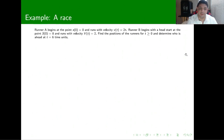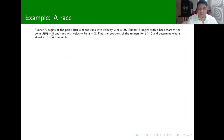Here is an example. Runner A starts at the point s of 0 equals 0 and runs with a velocity given by v of t equals 2t. A second runner begins with a head start of 8 meters, which we can characterize as s of 0 equals 8.